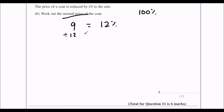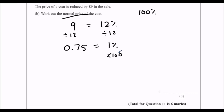So let's do that on the calculator. Divide by 12: 9 divided by 12 gives us 0.75, and that is 1%. So then to get 100%, I'll times by 100. So that's 75 — 100% is £75.